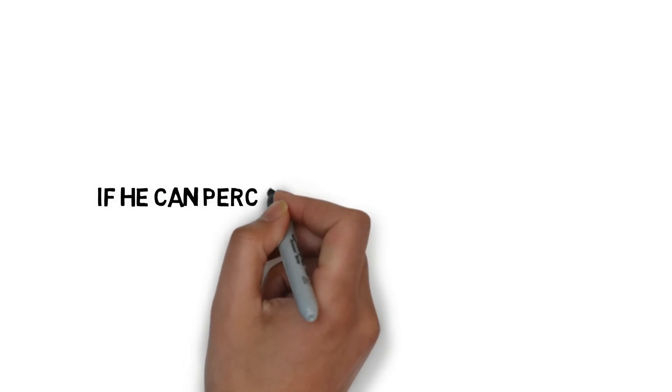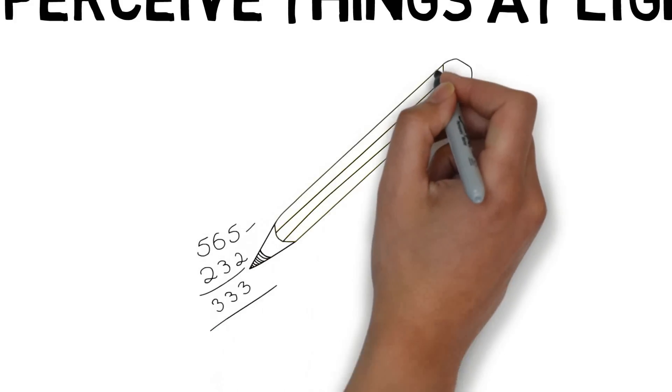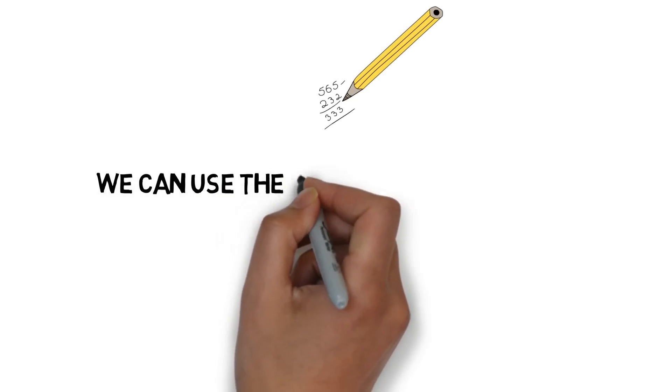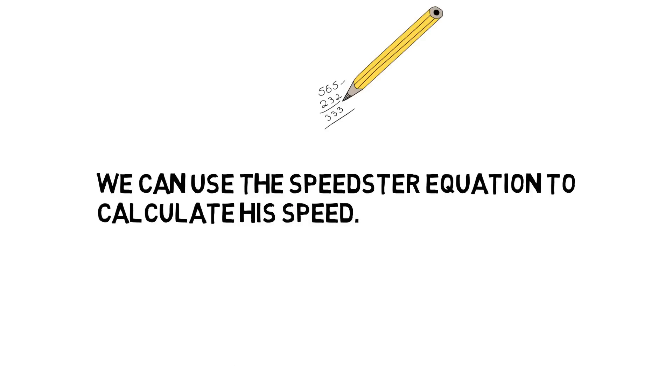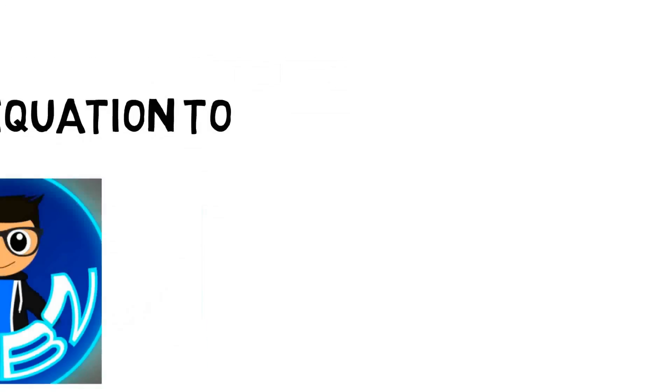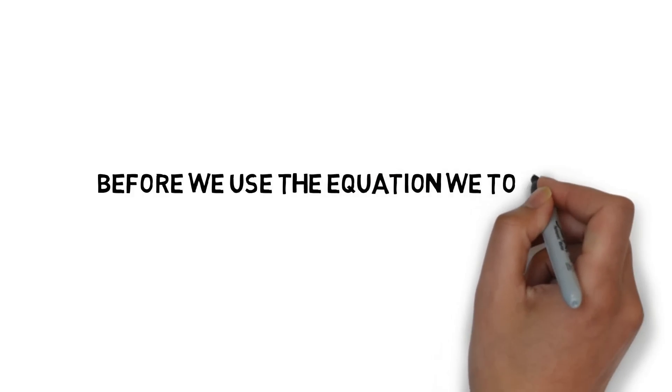First off, if this meant that he could perceive things at light speed, I could finally figure out who keeps stealing my pencils. Larry, I know it's you. Anyways, we can use the speedster equation to calculate his speed based upon his perception of time. But before we use the equation, we need to find a few requirements first.